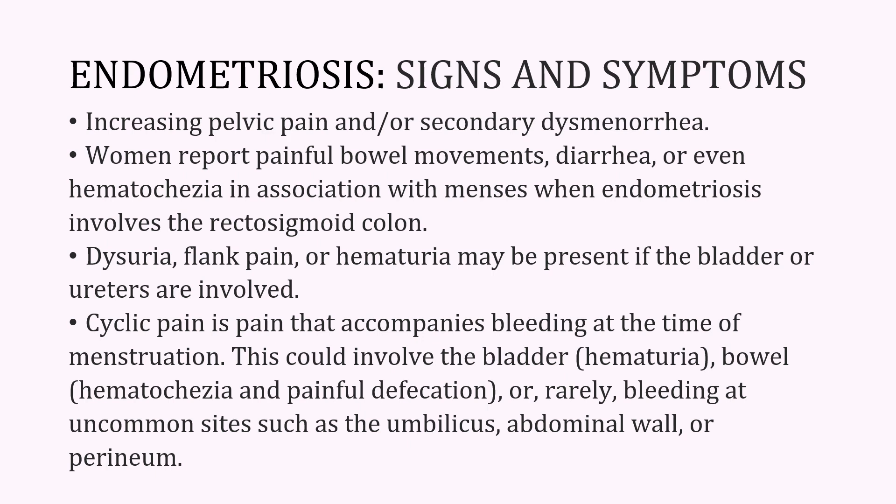The patient may complain of increasing pelvic pain and secondary dysmenorrhea, and it is very important to understand that the pain pattern has changed over time. They may even complain of painful bowel movements, diarrhea, or hematochezia in association with menses when endometriosis involves the rectosigmoid colon. Dysuria, flank pain, or hematuria may be present if the bladder or ureters are involved. Cyclic pain accompanying bleeding at the time of menstruation could involve the bladder, bowel, or rarely bleeding at uncommon sites such as the umbilicus, abdominal wall, or perineum.